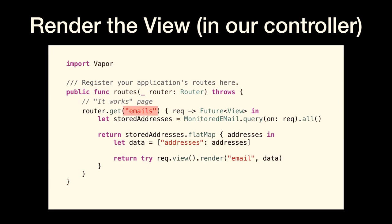In our view route, we have our router that routes from 'emails' — if we type in localhost/emails, it routes to this route. Then it does a query on our MonitoredEmail database, gets a list of all of them, stores them in 'addresses', and then renders the email template using that addresses data. We create a dictionary with the key 'addresses', pass that into the email template, and those values are pulled out of addresses and iterated over in the template to produce a list of emails.